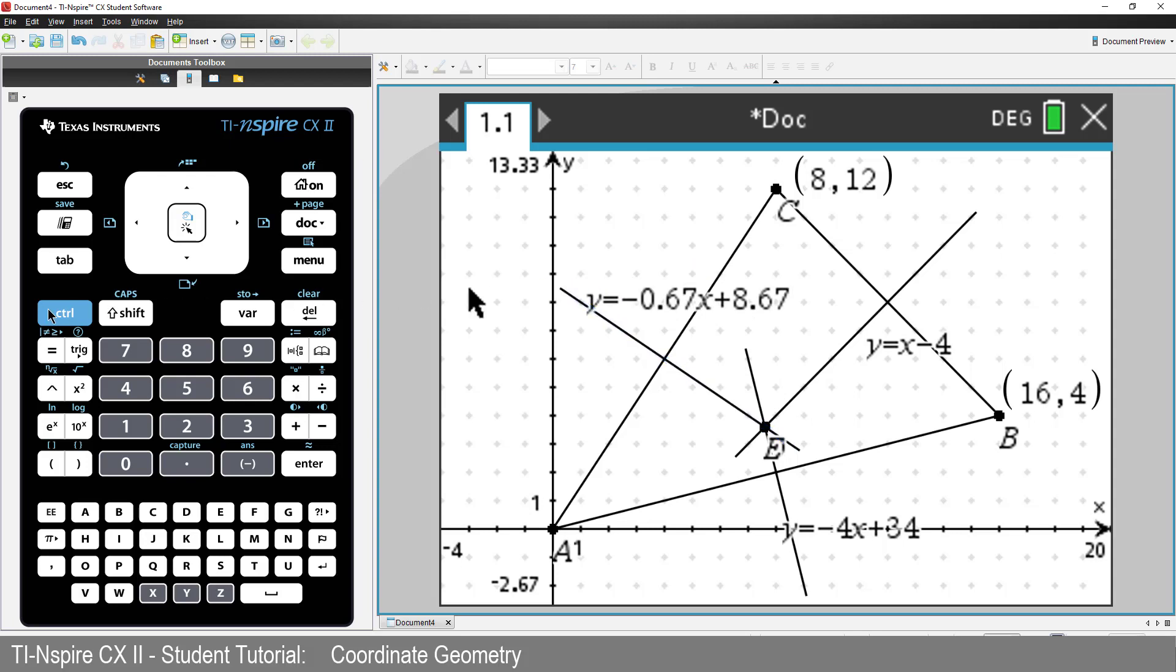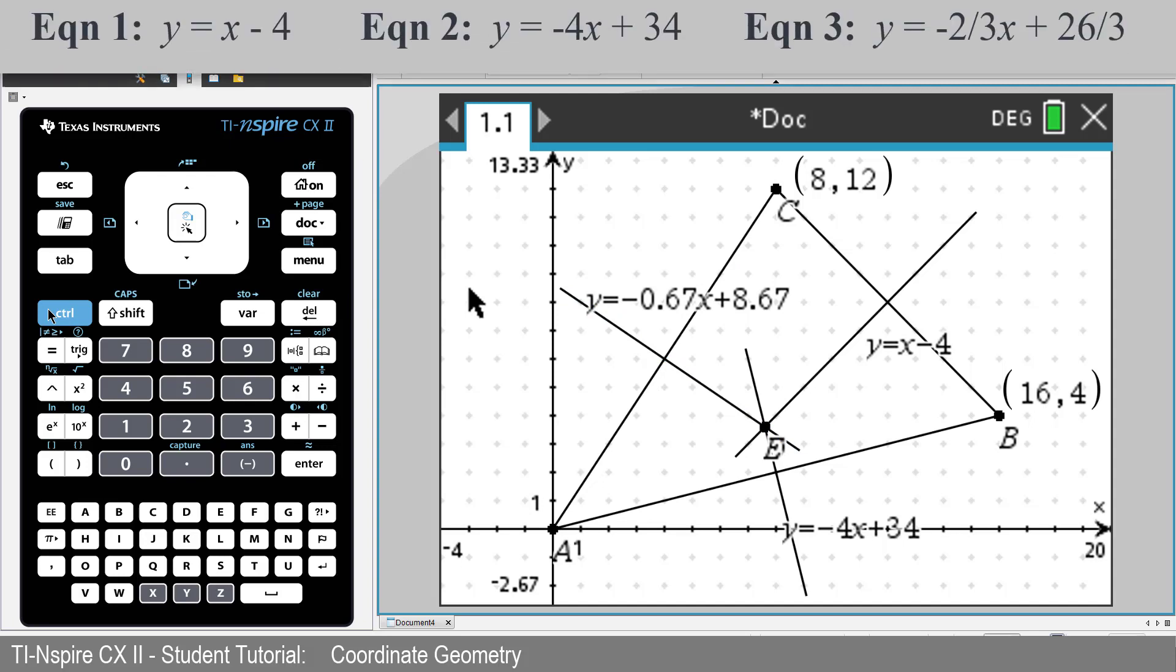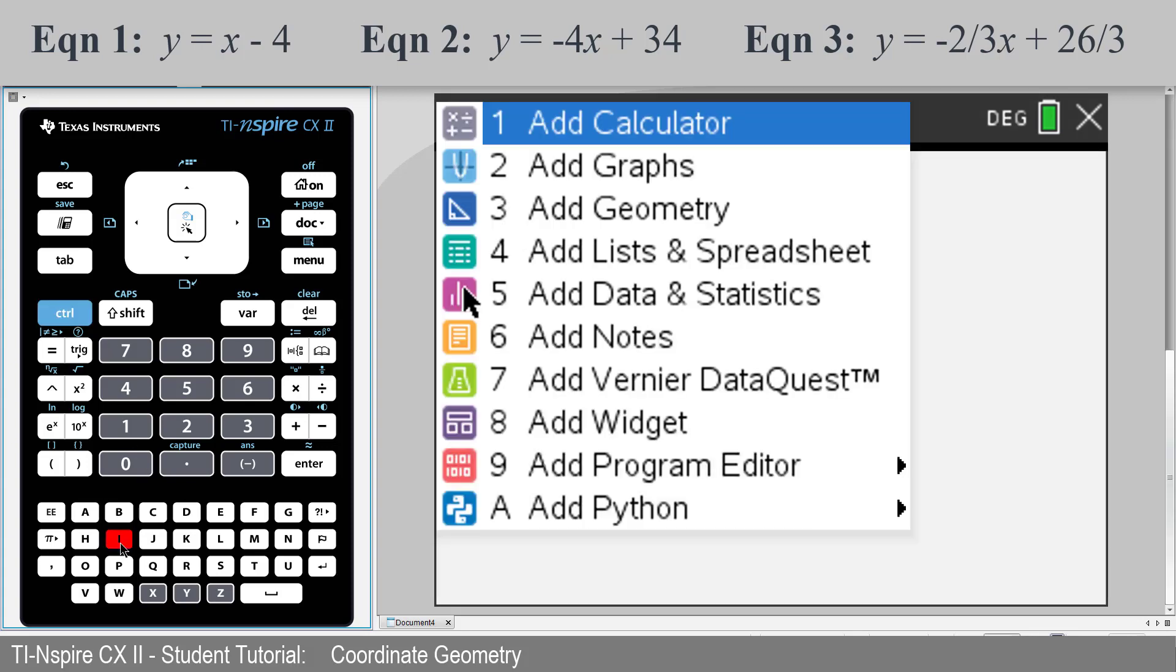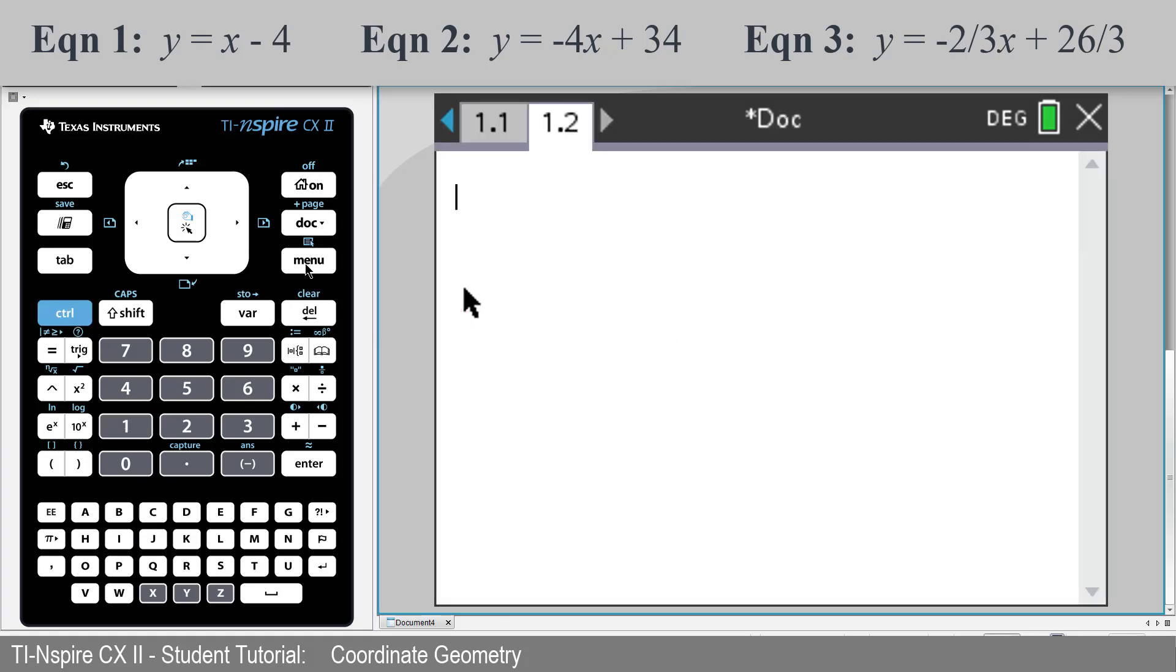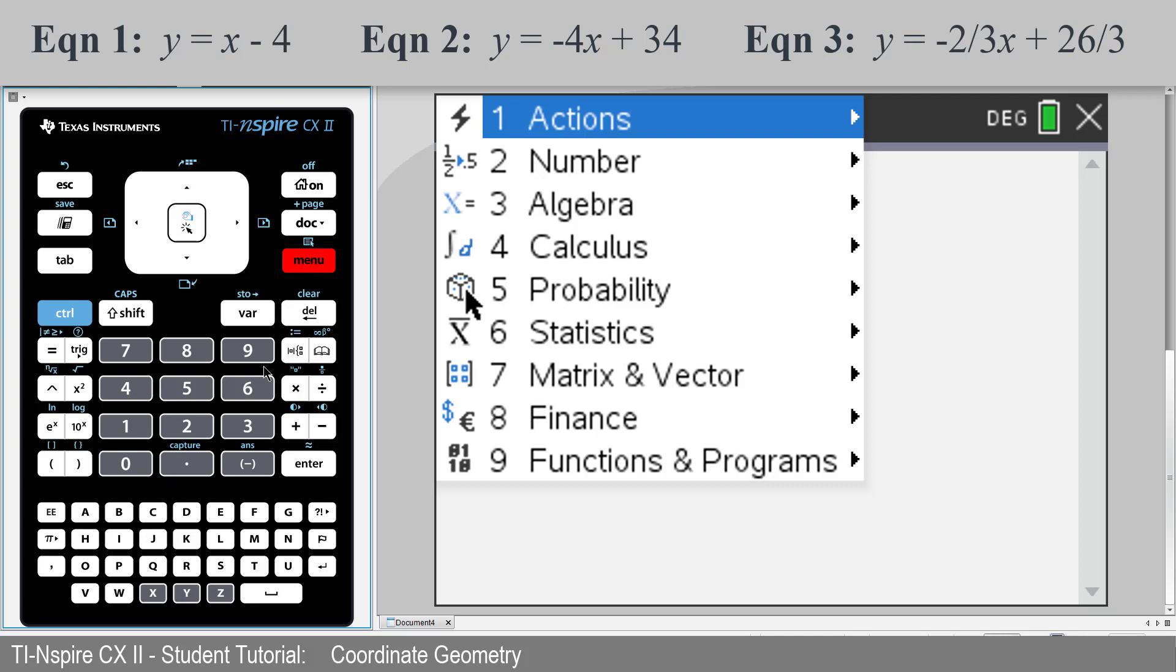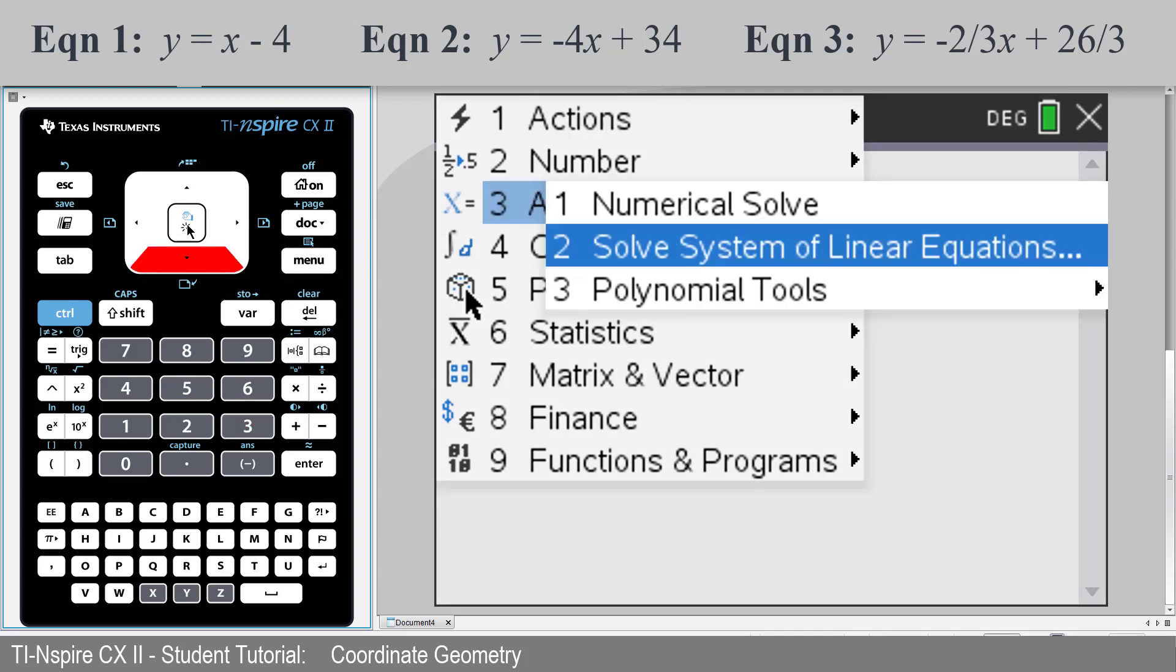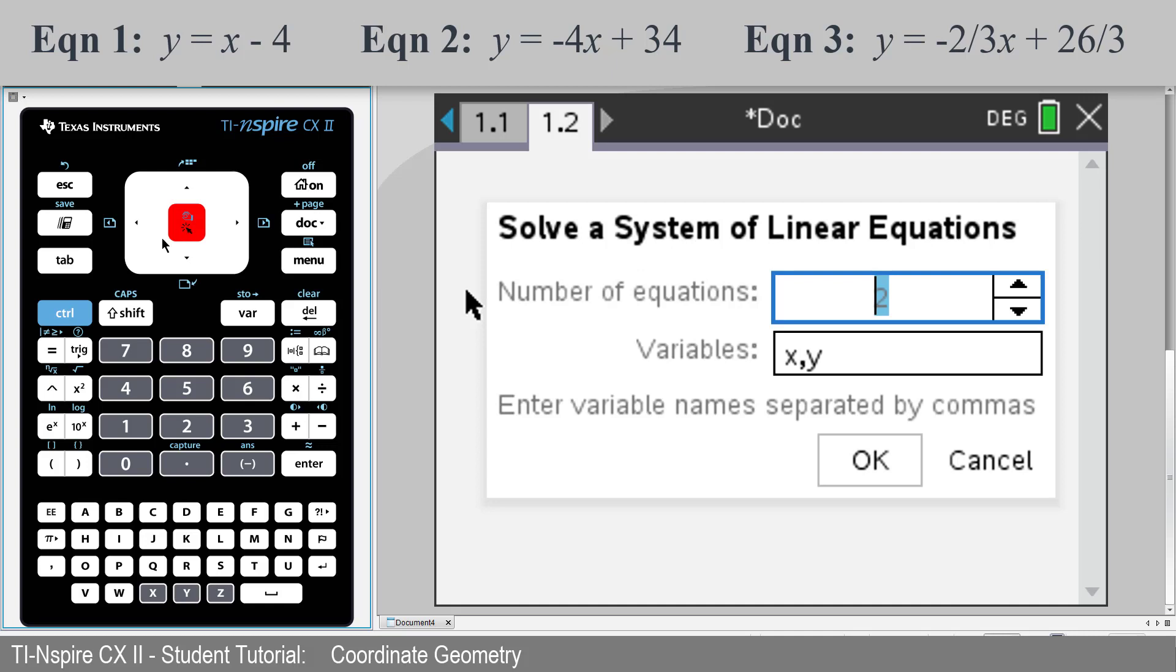We can use simultaneous equations to see where the lines intersect. Insert a calculator application. I'll choose the shortcut Control and I. We can solve the equation simultaneously. We have two equations. The variables are X and Y, so we can just press Enter.